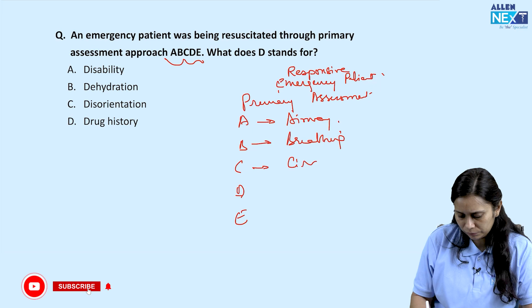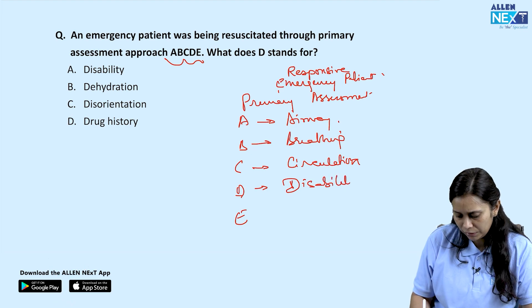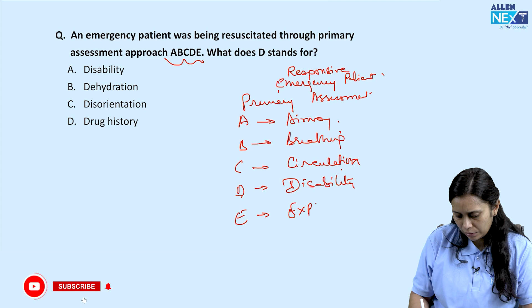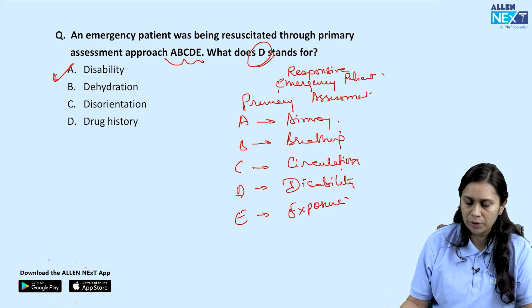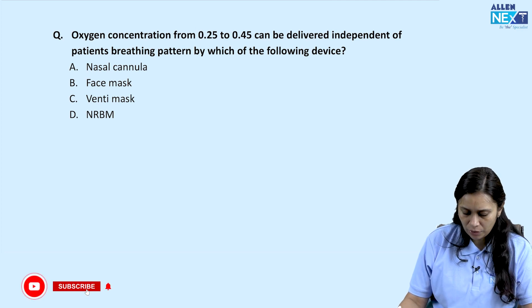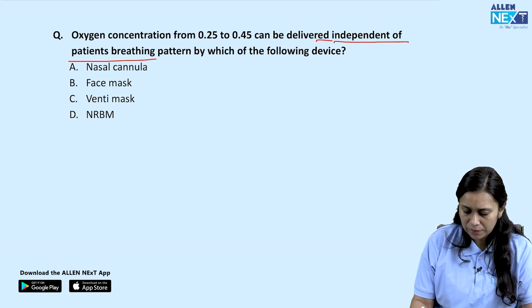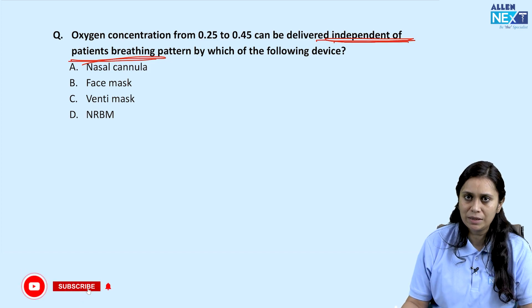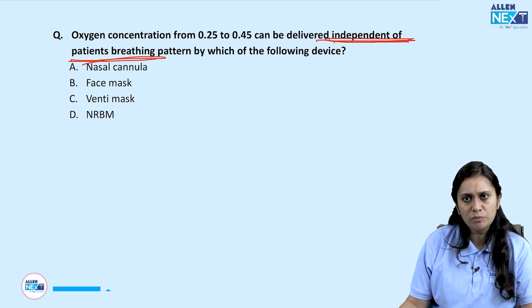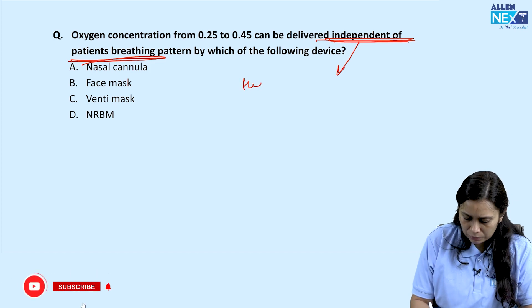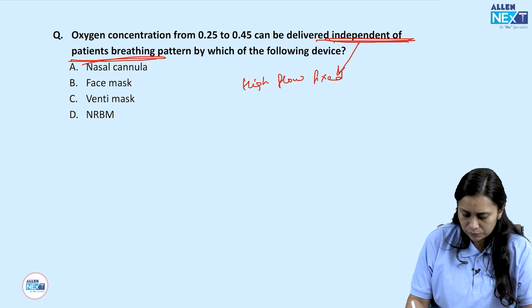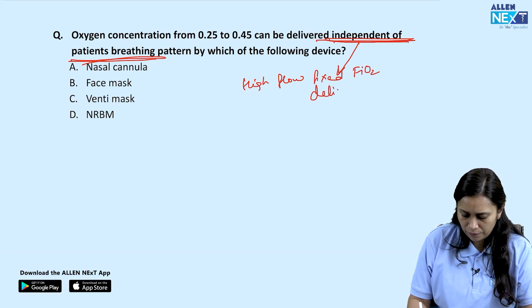D stands for Disability — referring to neurological effect — and E stands for Exposure. So D stands for Disability. Next question: oxygen concentration from 0.25 to 0.45 can be delivered independent of the patient's breathing pattern by which device? Independent of the patient's breathing pattern means it must be a high-flow, fixed FiO2 delivering device.